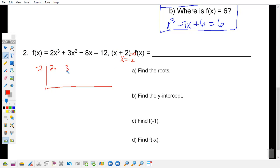So you have 2, 3, negative 8, negative 12. We're going to bring down 2. We're going to multiply, negative 4. We're going to add, multiply, negative 6, multiply. We get positive 12, which is 0.